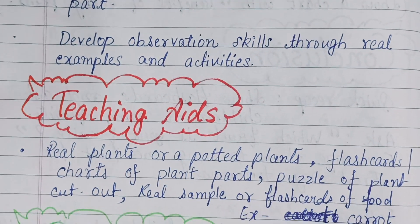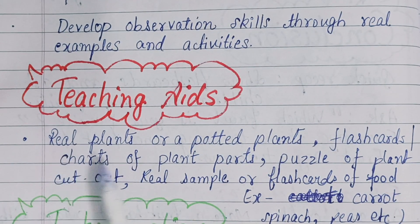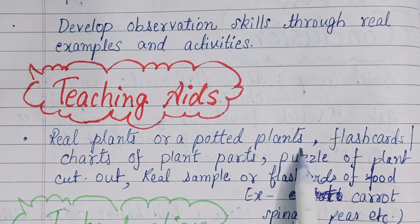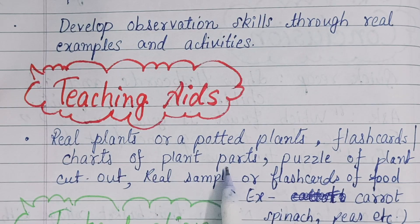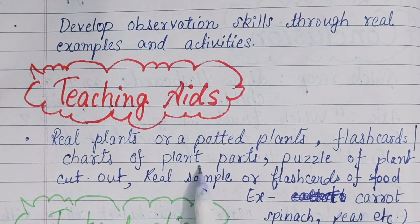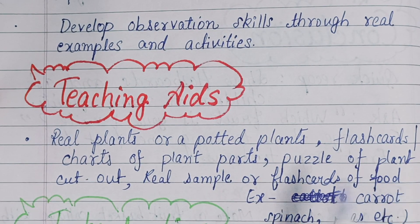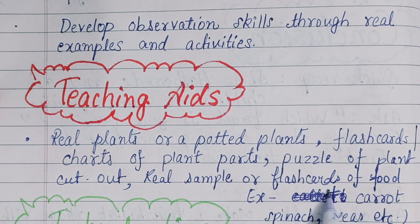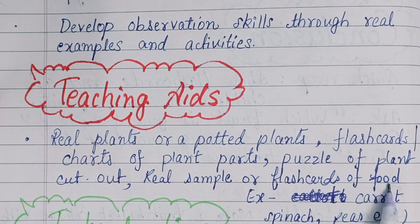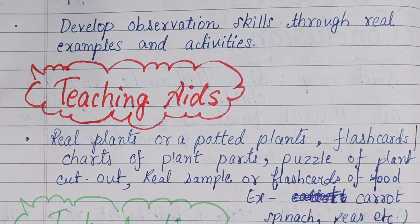Teaching materials needed: real plants or a potted plant, flashcards or a chart of plant parts, a puzzle of plant cutouts, and real samples or flashcards of food — for example, carrot, spinach, peas, etc.